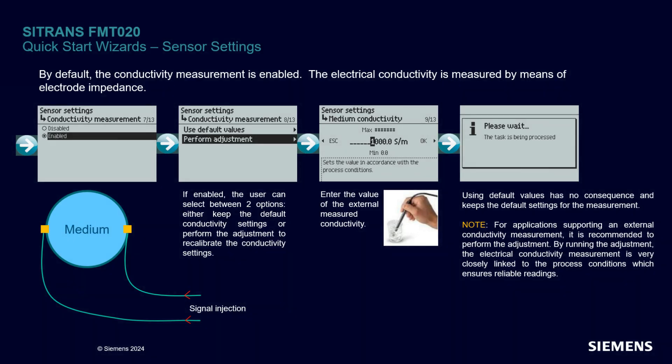The FMT-020 offers a new feature in the measurement of electrical conductivity. It is enabled by default. You can optimize its performance by entering the conductivity of the medium if you know it. With conductivity as a new process value, you can monitor the mixture of material in your pipe based on its conductivity property.